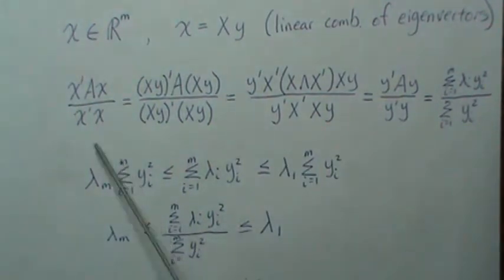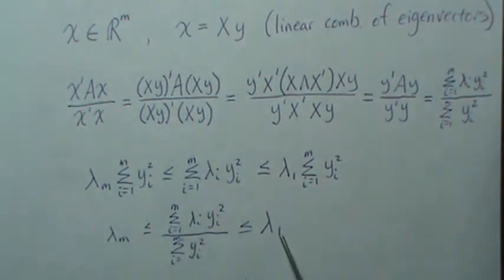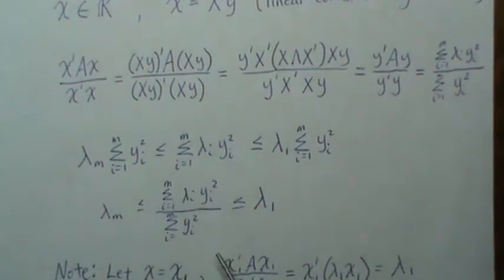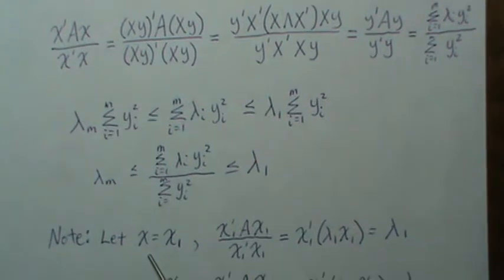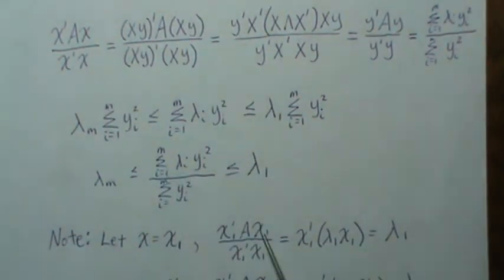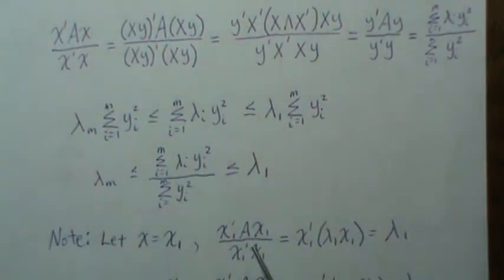So now let's show that we can achieve the min and the max. We do that by letting the x in this quantity be the eigenvector associated with the largest eigenvalue, and then we get this quantity. Well, this right here by definition is lambda_1 times x_1, and this right here is 1 because it's an orthonormal vector.